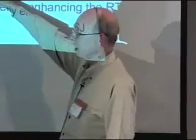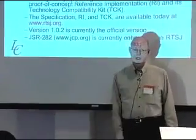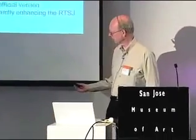The specification, the reference implementation, and the technology compatibility kit are all available today. If you don't already know about www.rtsj.org, you should — that's a place you can get the specification and look at it any time you wish. You can actually download the reference implementation for free and run it; I believe it runs under Linux. The current version of the specification is 1.0.2, and that's the one I'll be talking about today.